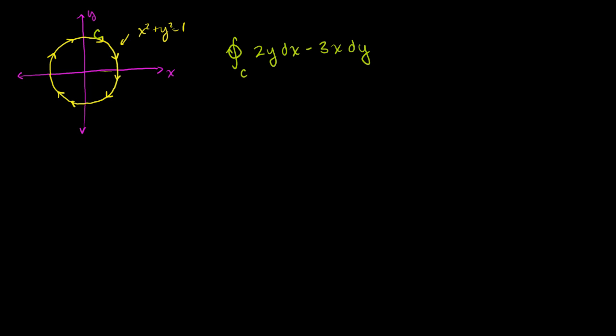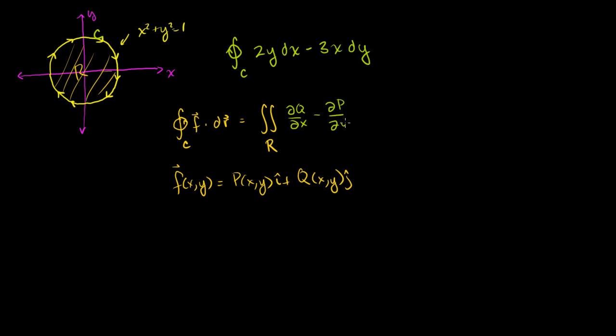So this is our path. Green's theorem tells us that the integral over some curve f dot dr, where f of xy is equal to p of xy i plus q of xy j, that this integral is equal to the double integral over the region, the partial of q with respect to x minus the partial of p with respect to y, all of that dA, the differential of area.